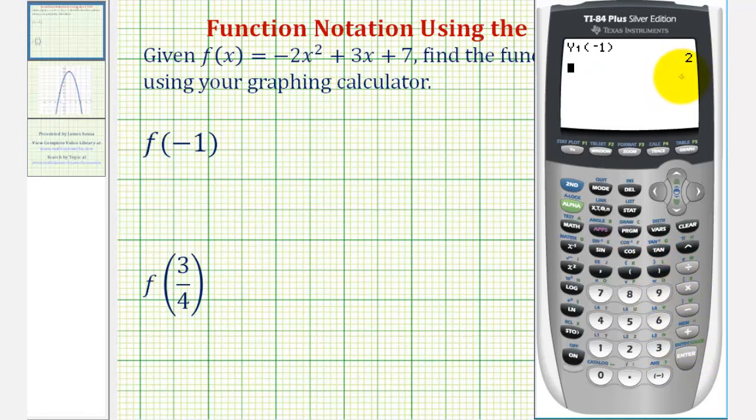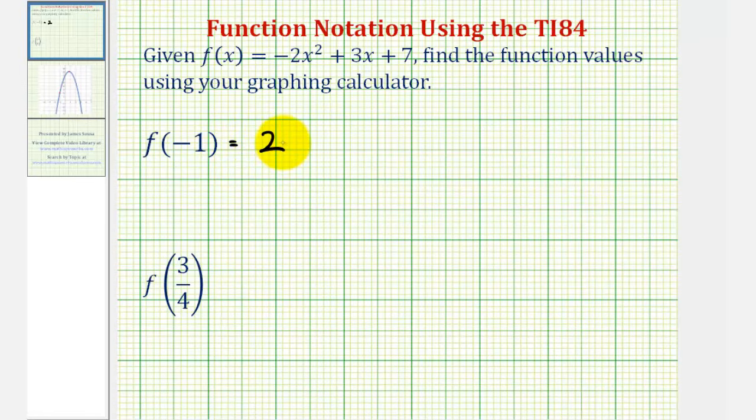Our function value is positive 2. Now remember, whenever we find a function value, we're actually finding a point on the function, which we'll verify graphically in just a moment. If f of negative 1 equals 2, that means the function contains the point with an x-coordinate of negative 1 and a y-coordinate of positive 2.